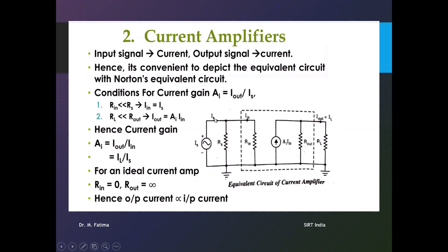The output current Iout, or IL, is the output current, and Iin is the input current. Is is the source current. The current gain is actually Iout divided by Is. We need to determine what the ideal values of input and output resistance should be so that maximum current can flow through this amplifier.